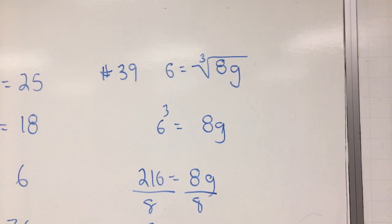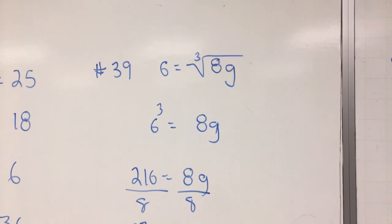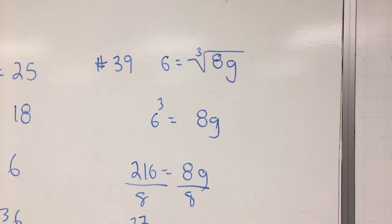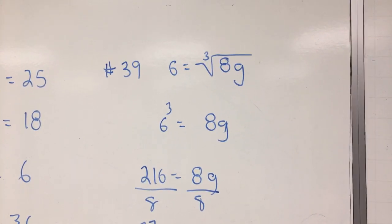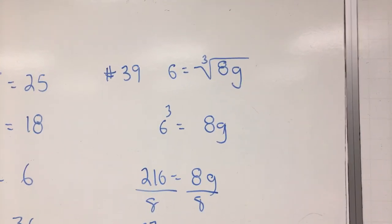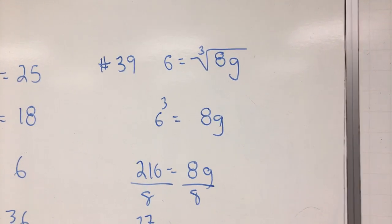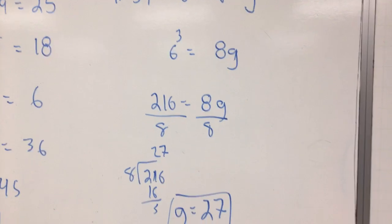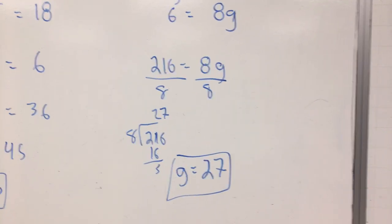Now number 39. This is a cube. So this is the cube root. How do you get rid of a cube root? You cube both sides. The cube root is something cubed. 8G. 6 cubed, 216. Now divide by 8. And I had to do the arithmetic on that one. And G is equal to 27.